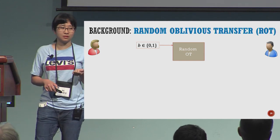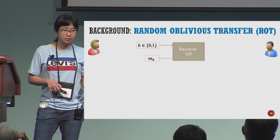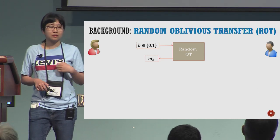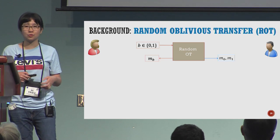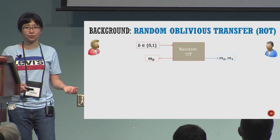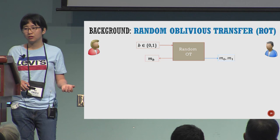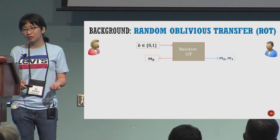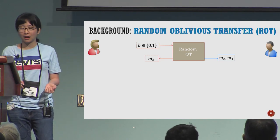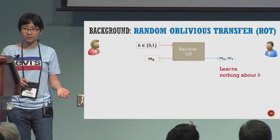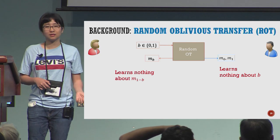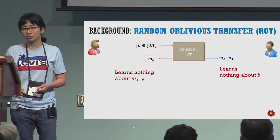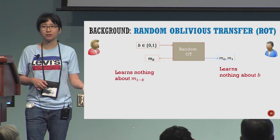For simplicity, I want to present the random OT where Alice's input is just one bit and she receives the OT value corresponding to her choice. On the other side, Bob receives two OT values from the protocol. The important thing is that Bob doesn't know Alice's choice bit and Alice doesn't know the other OT value that Bob has.